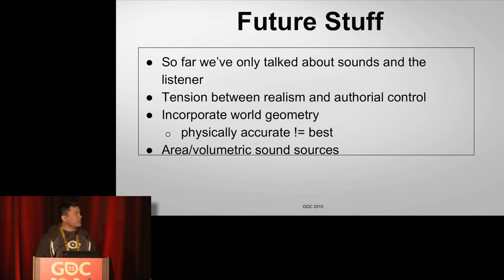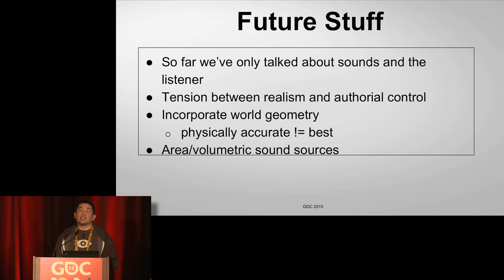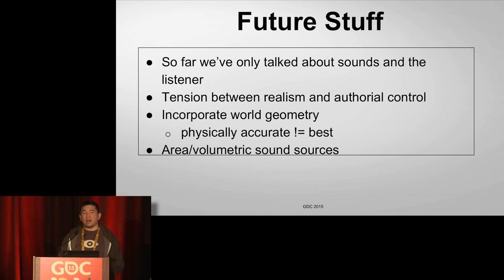Looking at future stuff, so far I've only talked about sounds and the listener. There's other aspects that are ongoing R&D from universities and other companies — things like incorporating world geometry and how to get reverb, reflections, and occlusion actually working. As a result, we've created a tension between realism and authorial control. As engineers we want to model everything realistically; as content developers you want that as a basis but then want to tweak it, just like in film. Another less-explored area is area and volumetric sound sources — certain sounds don't sound natural because they're all pinpoint tiny sound sources.